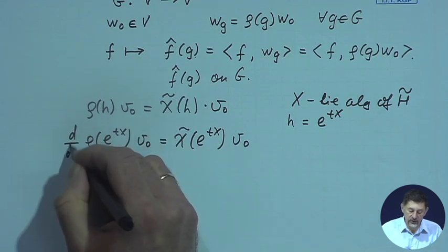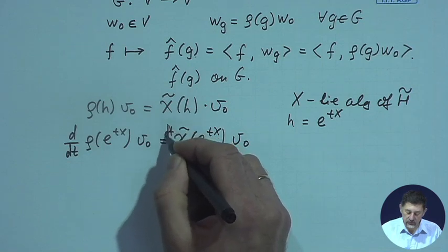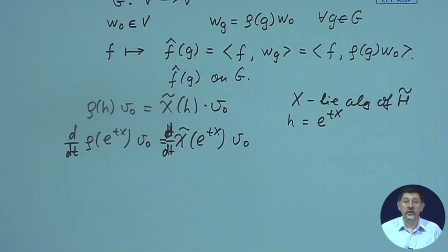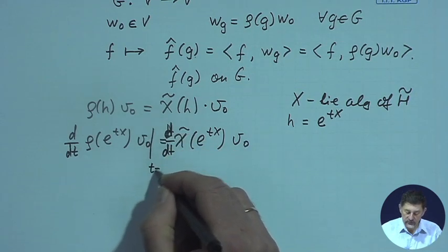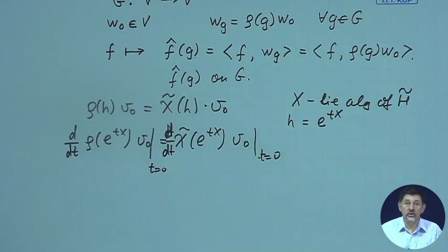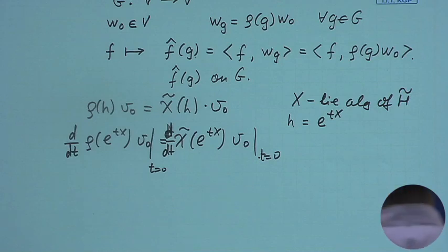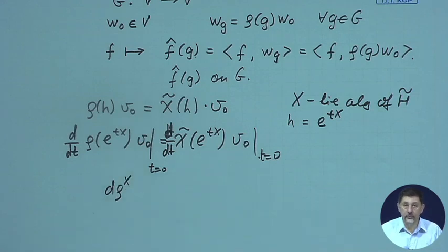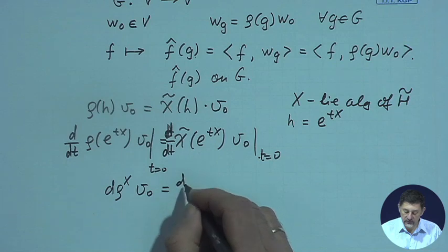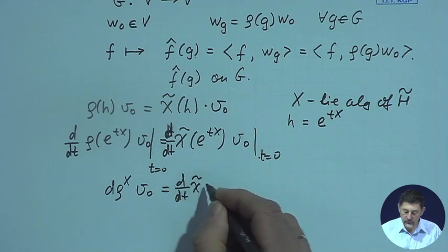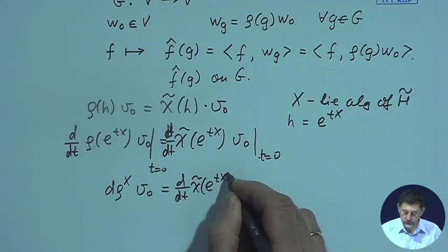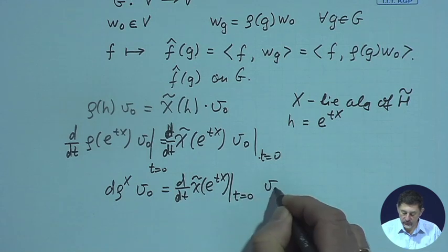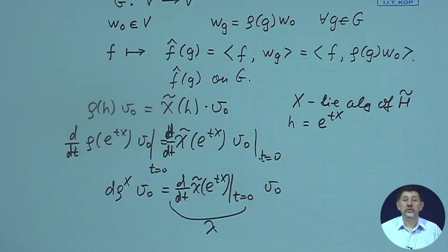If we differentiate with respect to T on both sides, the identity will be preserved, and if we make the substitution T equal to 0, then the identity will hold. That means on the right-hand side, we will have the derivative representation: the vector field X acting on V_0 equals a number calculated as the derivative of this character. So this is a certain lambda which appears here.